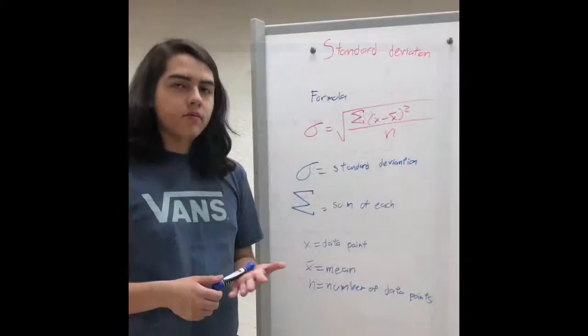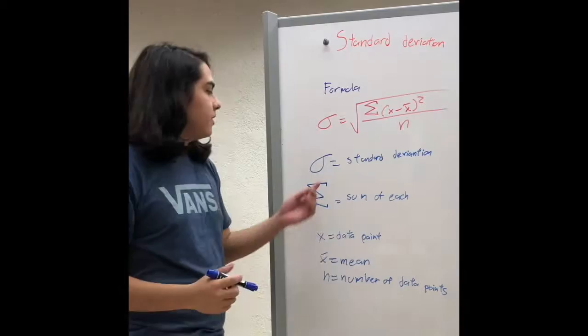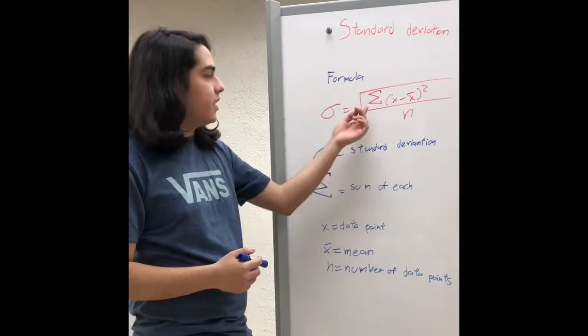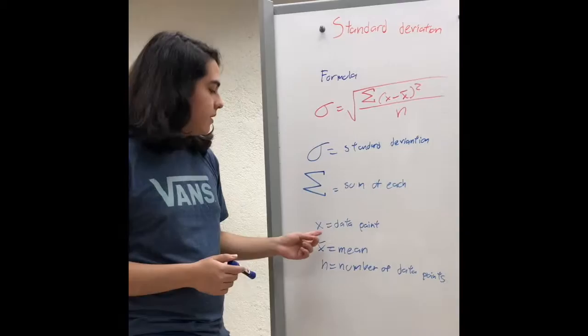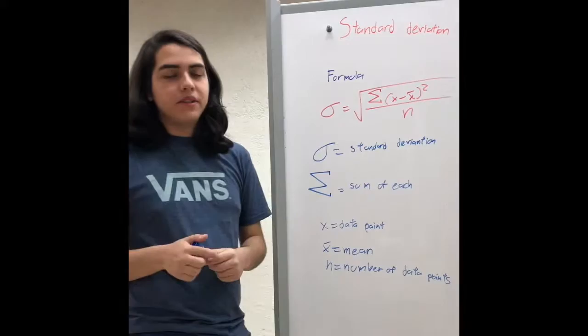The formula for standard deviation is this. And the sigma represents the standard deviation itself. So, this symbol, somatoria, means to add everything. Then we have x, which represents a data point. X with a bar on the top, which represents the mean. And n is the number of data points.